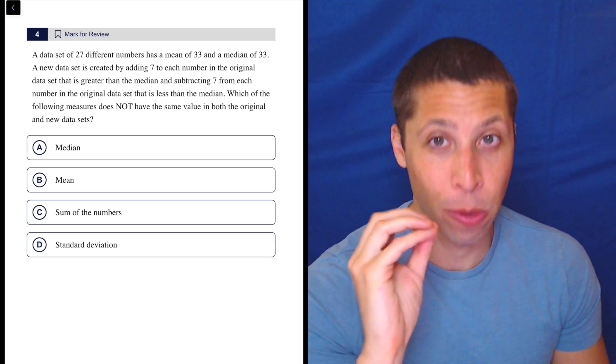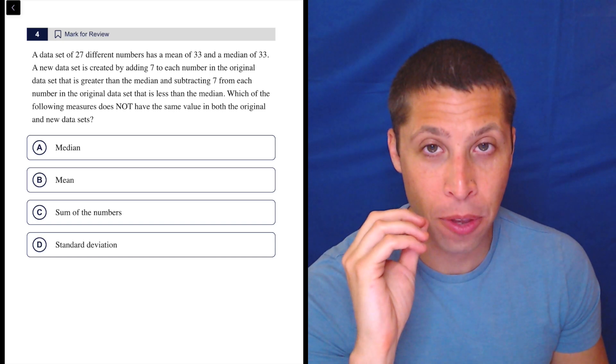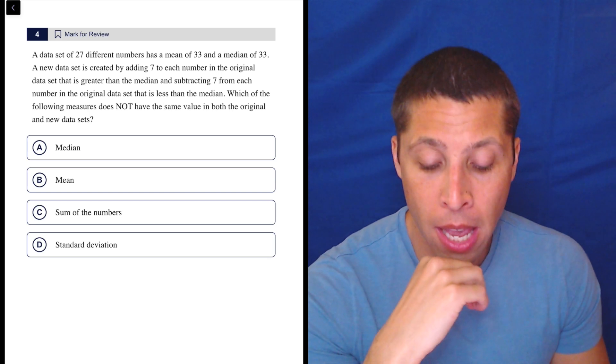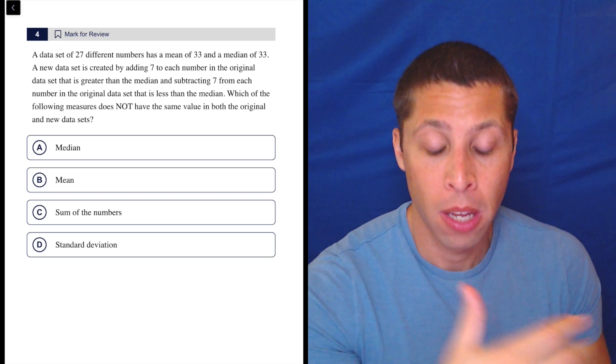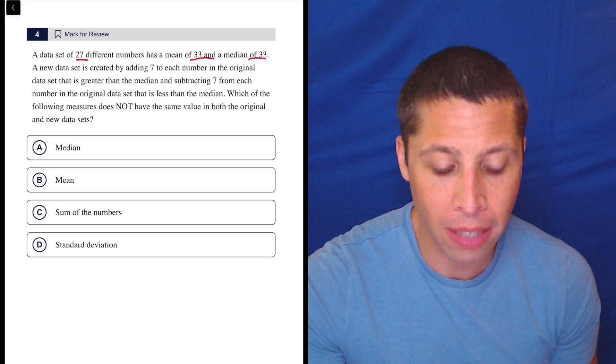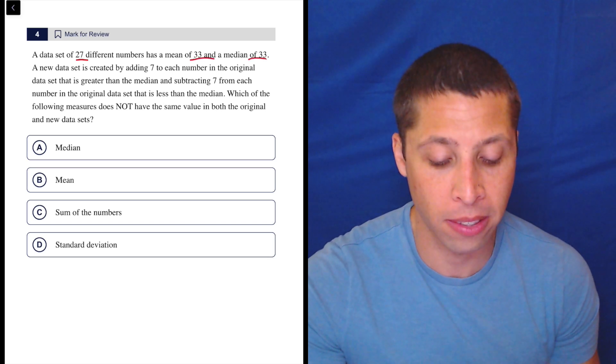Okay, so I hate these questions because we have to treat them differently depending on which module we're in. If we're in the first module, we could come up with this set. A data set has 27 different numbers, has a mean of 33 and a median of 33. We could easily come up with this set.